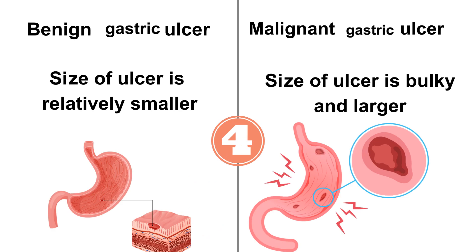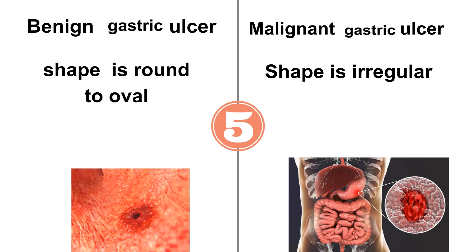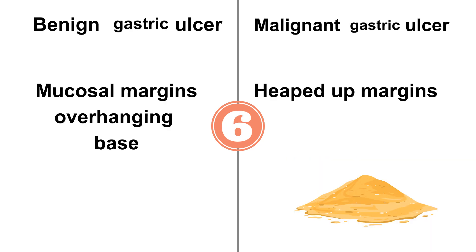The size of the ulcer is relatively smaller in benign, while in malignant it is bulky and larger. In benign the shape is round to oval, while in malignant it is usually irregular. In benign the mucosal margins overhang the base of the ulcer, while in malignant the margins are heaped up.